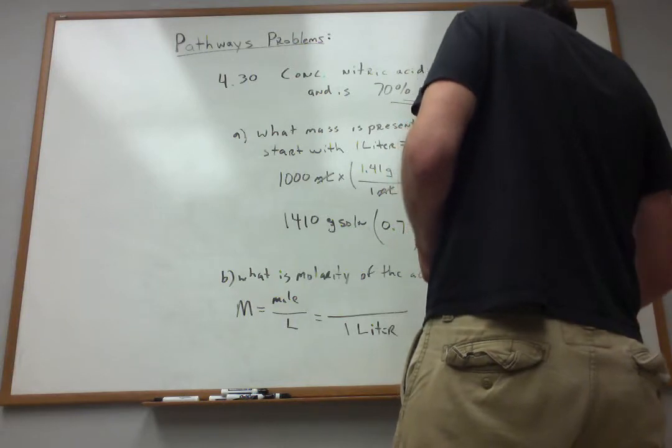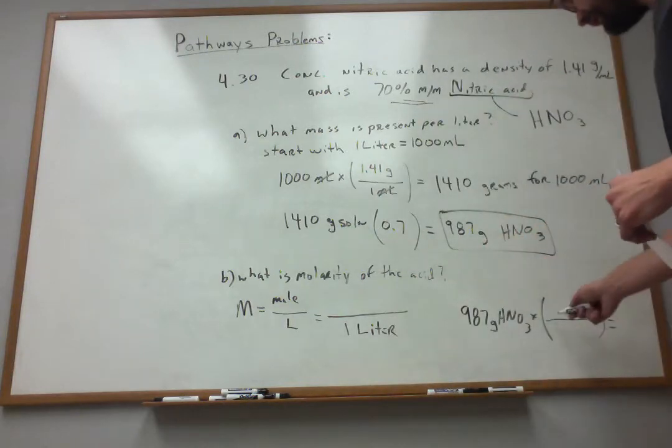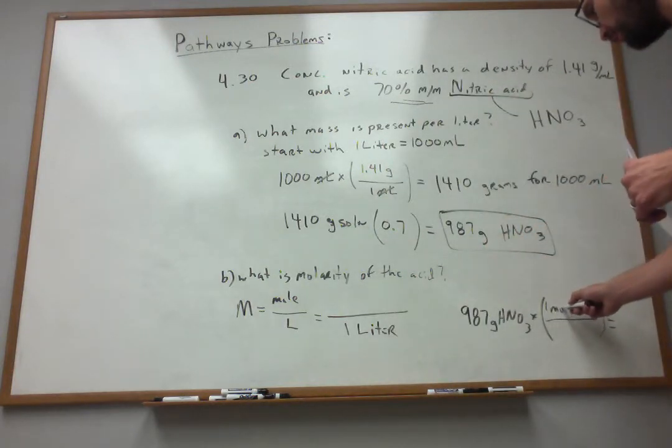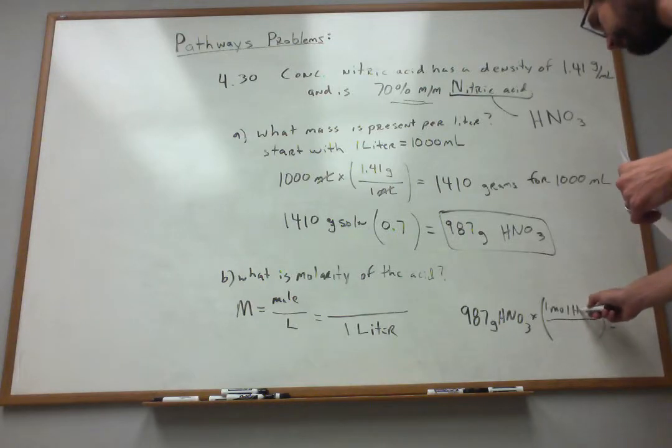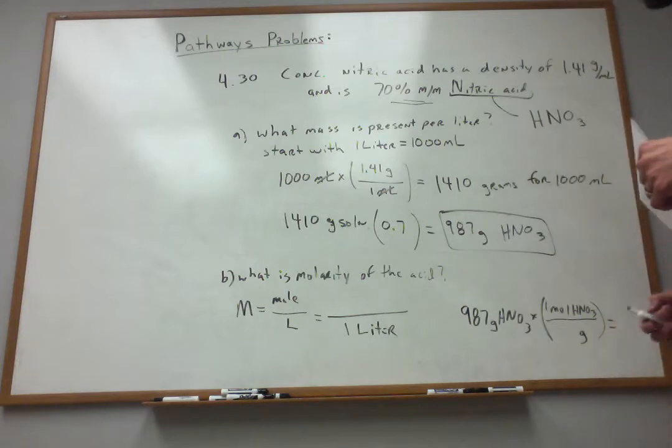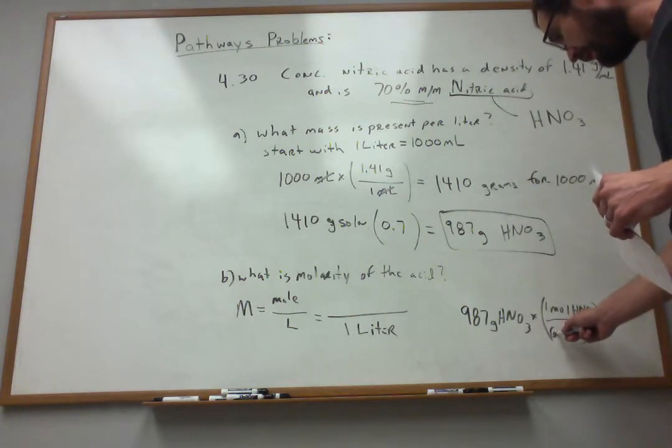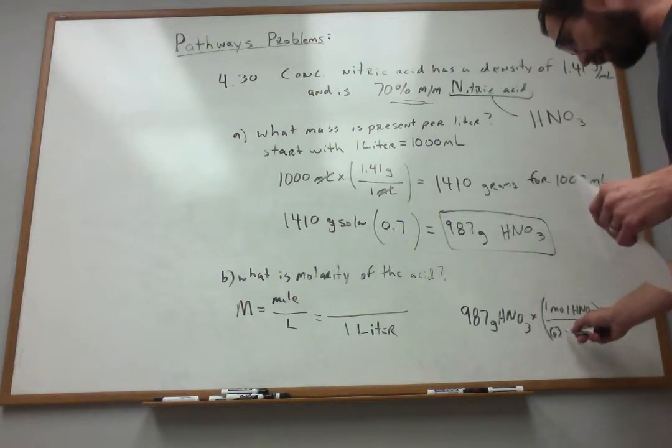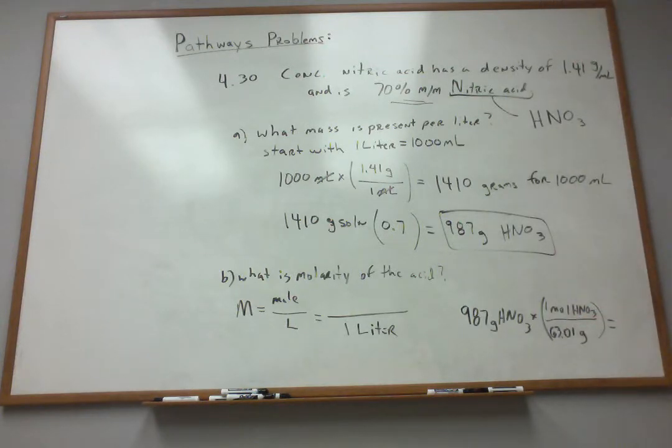Sure enough, I can do that because I know that one mole of the HNO3 has a specific mass associated with that. All I need to do is look up the molar mass for nitric acid. It turns out that's a little over 63 grams per mole, 63.01 grams per mole. So I do the division and figure out how many moles must be present.